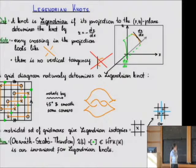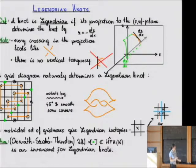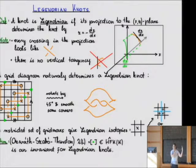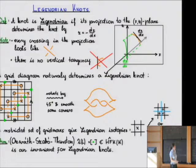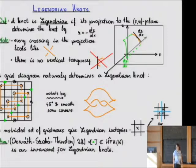A Legendrian knot is a knot whose projection in the xz-plane determines the knot by the equation that the third coordinate y equals dz/dx. If you have this projection, you can figure out how high to lift the third coordinate just by the slope of the projection, which means every crossing is determined: the strand with the steeper slope always goes over. You cannot have any vertical tangency because that would mean an infinite third coordinate.